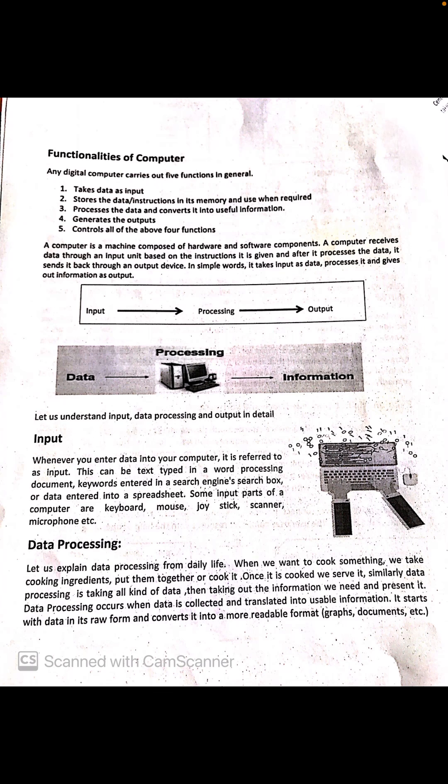Computer takes data as input. Second, store the data or instruction in its memory and use when required. When required, we can use computer data that we entered. Computer can store that information. Third one is process the data and convert it into useful information. The data we input, computer processes and performs actions.